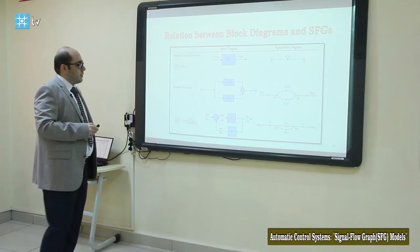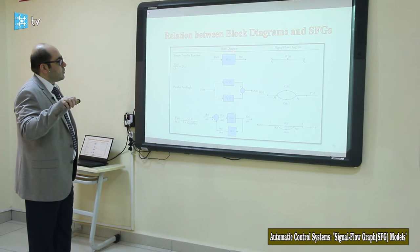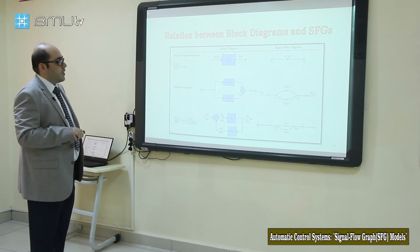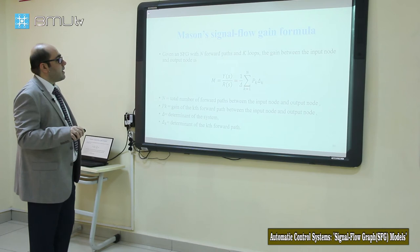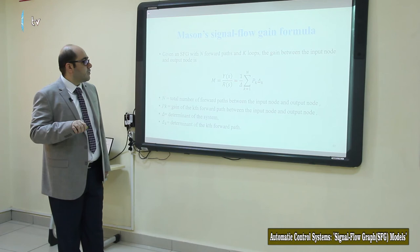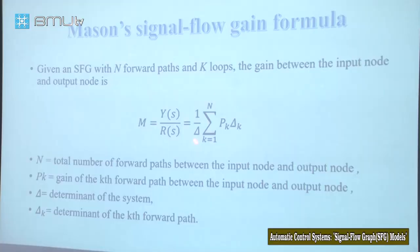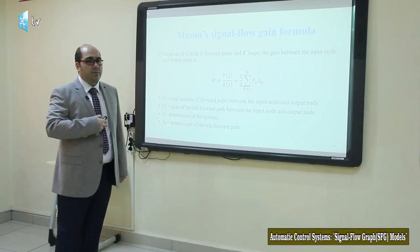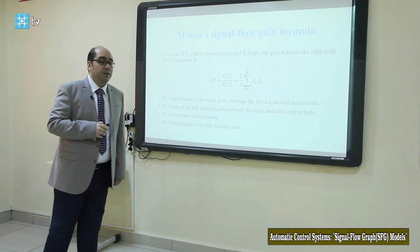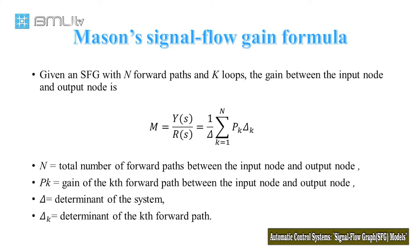Why did we replace the block diagram with the signal flow graph? Because using the signal flow graph, we can calculate the transfer function of each system using Mason's formula. Mason produced a formula using which we can find the transfer function of any system. Let's talk about Mason's formula.